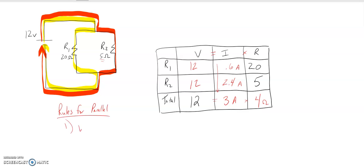The first rule is that the voltages are the same as the battery. Voltages in parallel are the same as the battery, and therefore they'll be the same as each other as well.